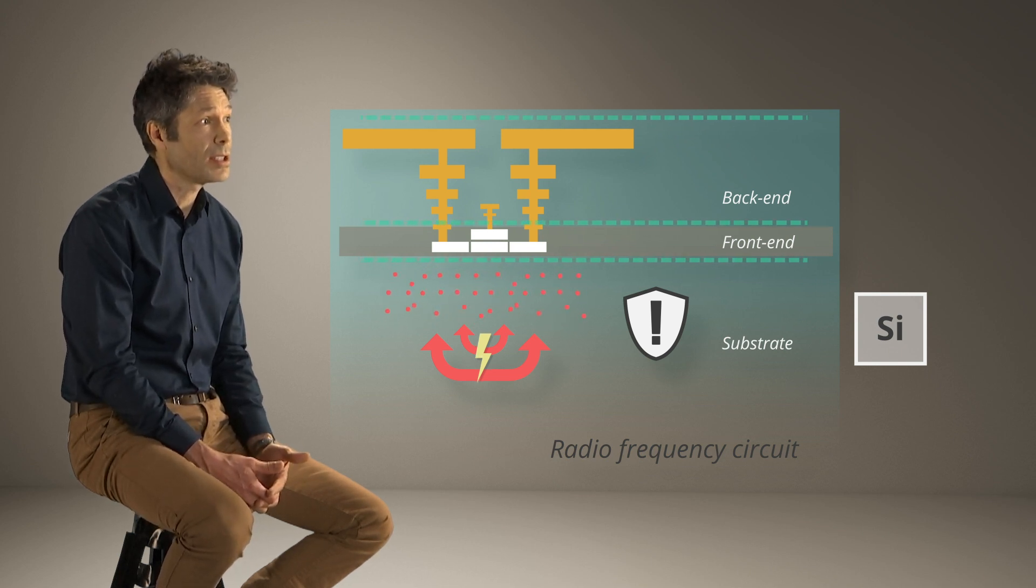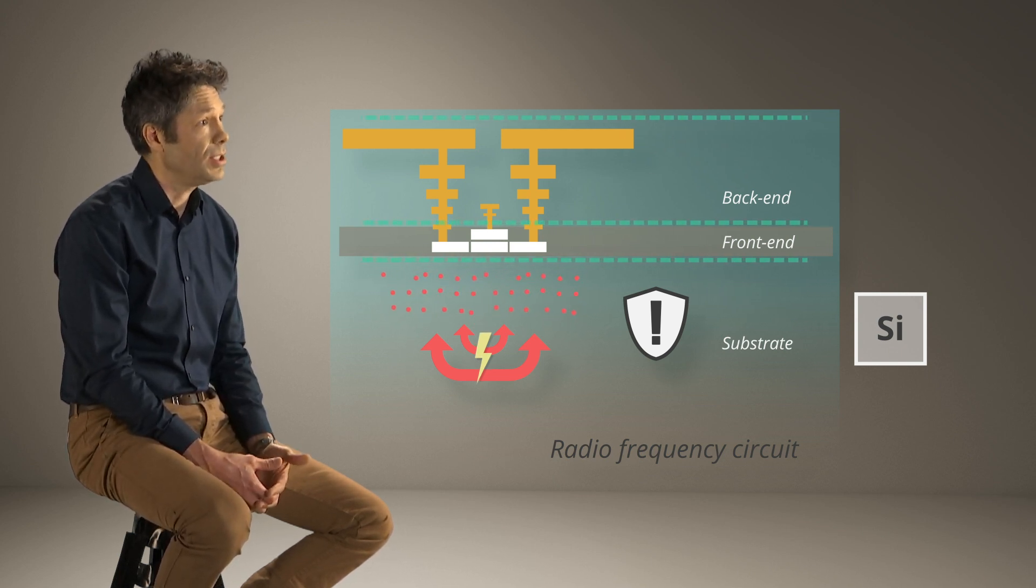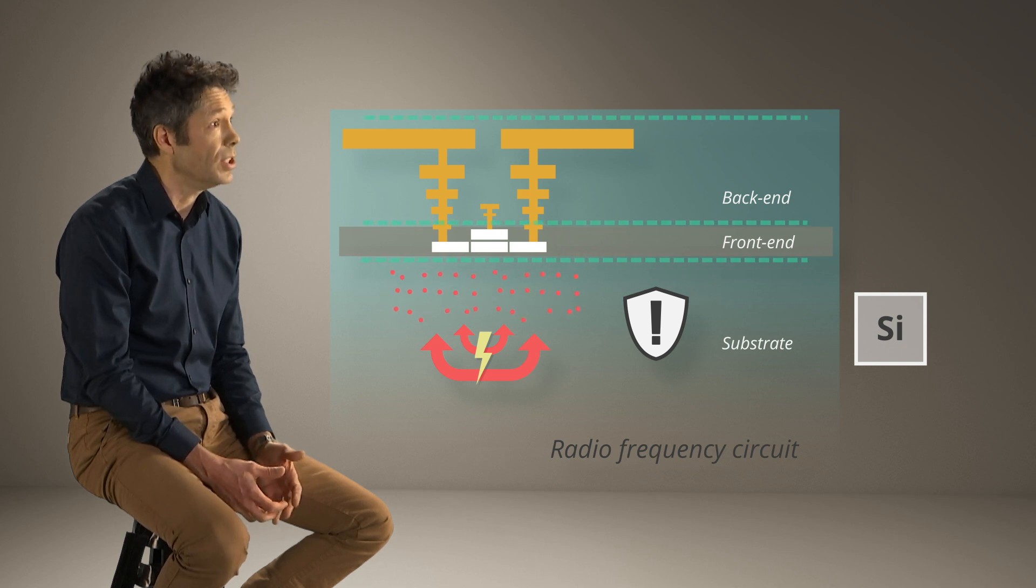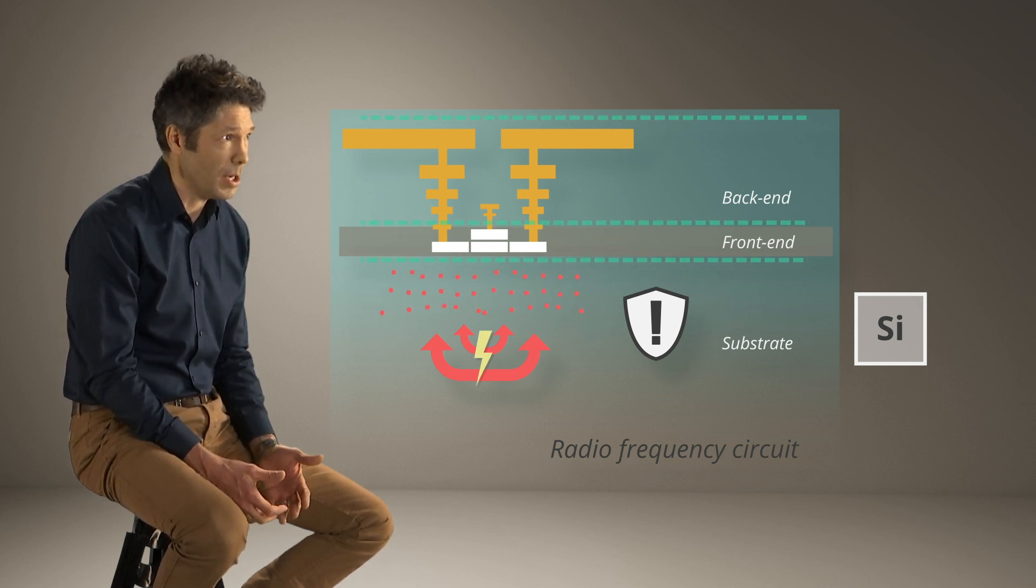You have high insertion loss, you have low quality factor for the passives that you try to integrate, and you have a lot of harmonics coming from the substrate.